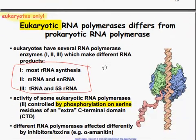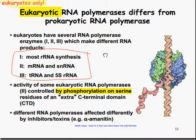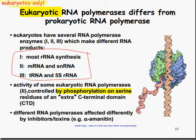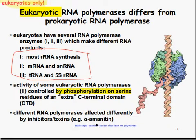Still in eukaryotes only: eukaryotic RNA polymerase differs from prokaryotic RNA polymerase. Eukaryotes have several different RNA polymerase enzymes — 1, 2, and 3 — which make different RNA products. RNA polymerase 1 makes most of the rRNA. RNA polymerase 2 makes mRNA and snRNA. RNA polymerase 3 makes tRNA and 5S rRNA. The activity of some eukaryotic RNA polymerase 2 is controlled by phosphorylation on serine residues of an extra C-terminal domain. Different RNA polymerases are affected differently by inhibitors or toxins — for example, alpha-amanitin, which creates death caps, a toxin that can shut down RNA polymerase.